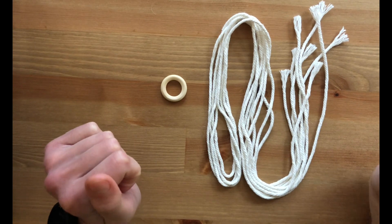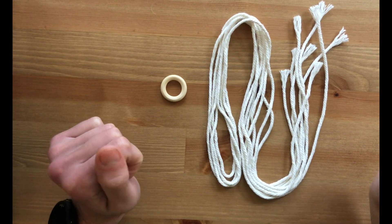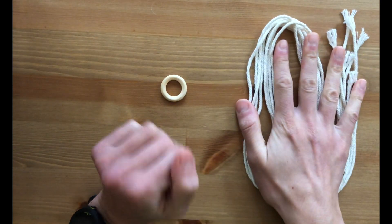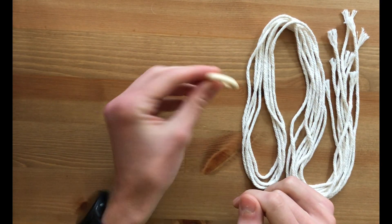Today we're going to make a macrame jar holder. In your kit you'll find four lengths of cotton cord and one wooden ring.